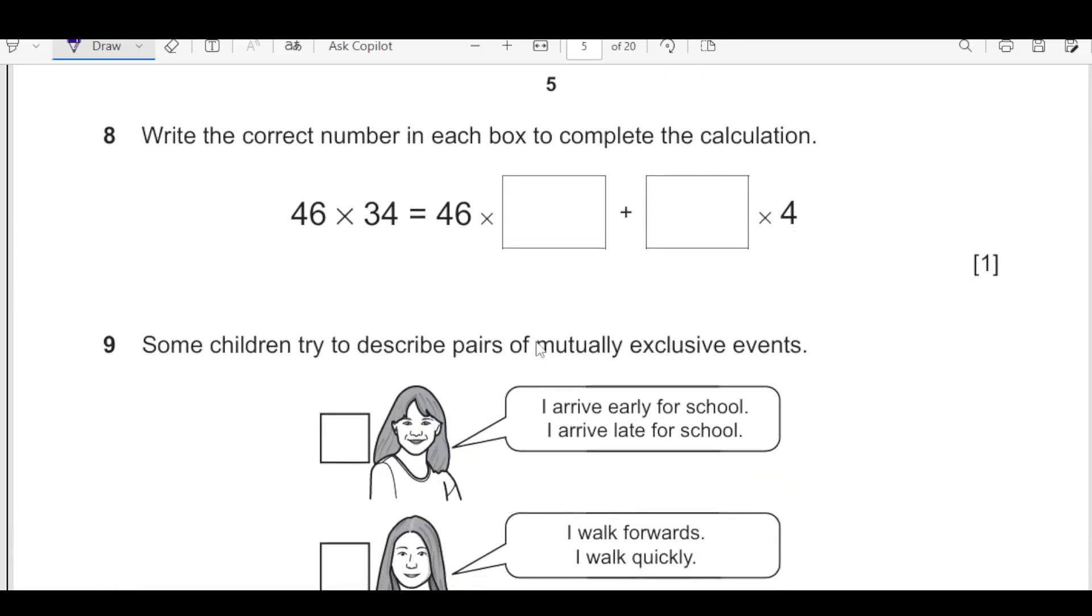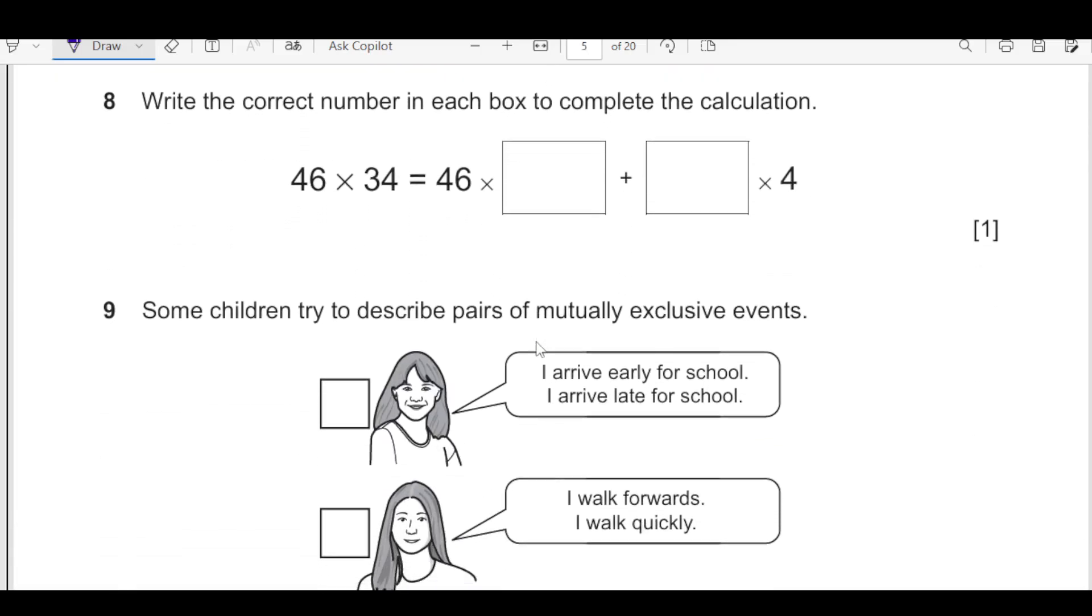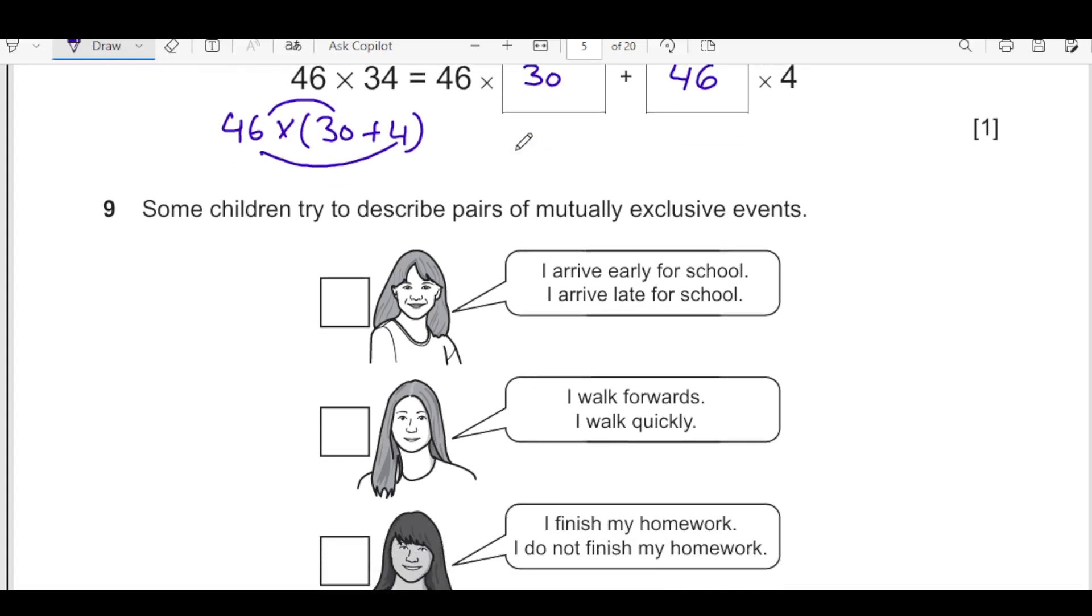Number 8, write the correct number in each box to complete the calculation. We have 46 times 34. This can be split. 46 times 34 can be written 30 plus 4 that makes 34. Then this 46 times 30 will come over here. Then we have 46 times 4. So we will write down here 46.